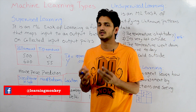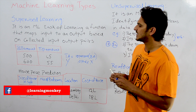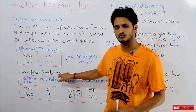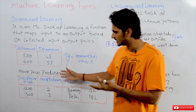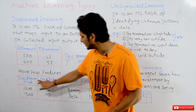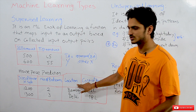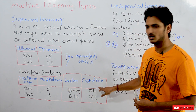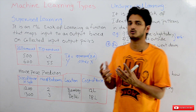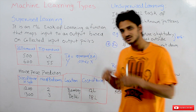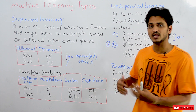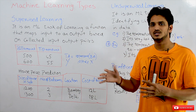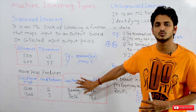Let's take one more example for better understanding of supervised learning: housing price prediction. First, we collect some data — size of the house in square feet, number of bedrooms, and location. These three parts are the input. What we have to predict is the cost of the house, which is the output. Based on the collected input-output pairs, we identify a mathematical function that maps input to an output. This type of problem comes under supervised learning.